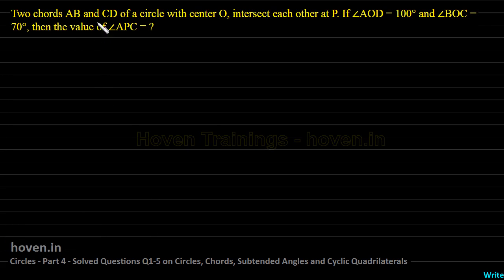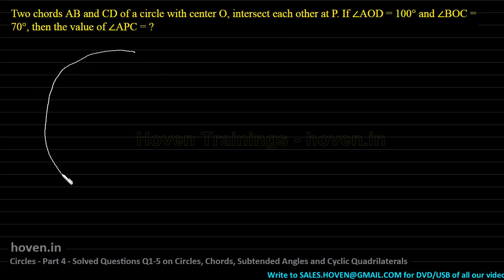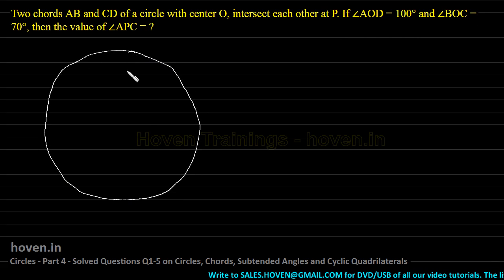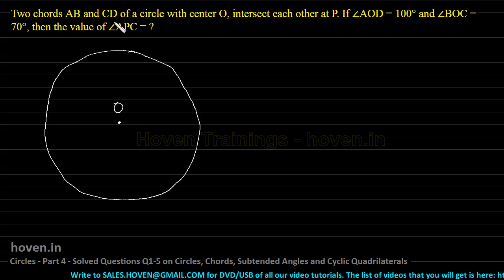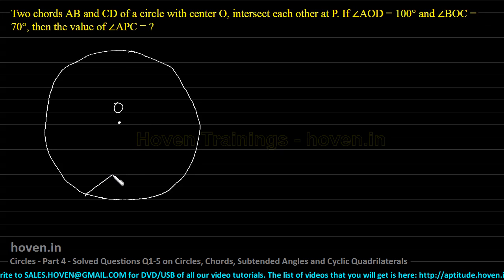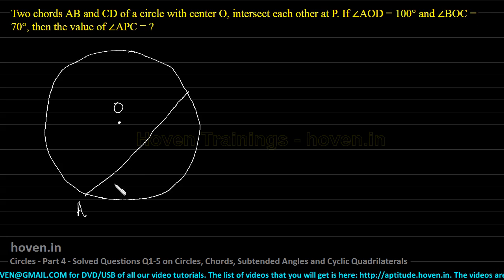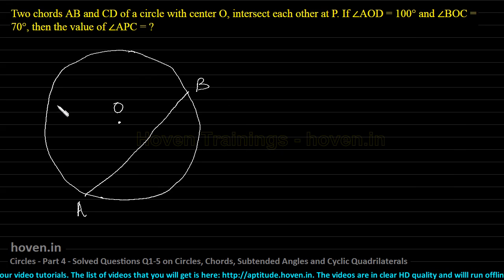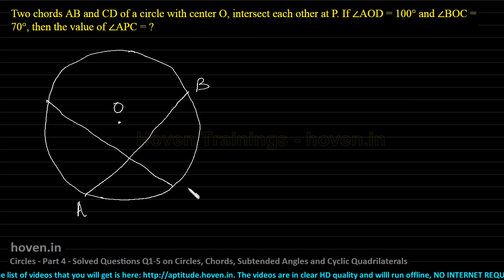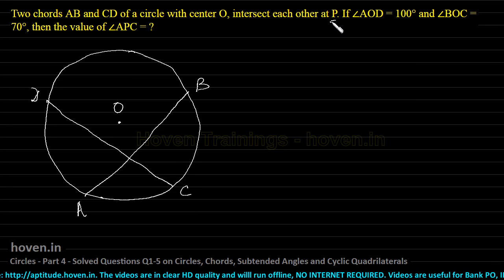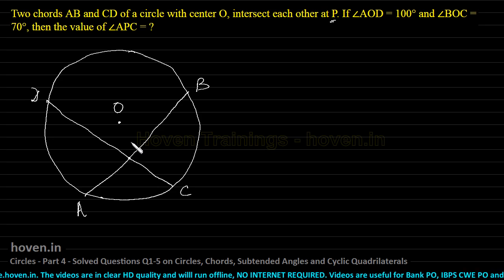Two chords AB and CD of a circle with center O intersect each other at point P. Let us draw a circle first of all, and let this be the center O. There are two chords AB and CD. This is chord AB and then there is a second chord CD. These two chords intersect each other at point P. Let this point be P.